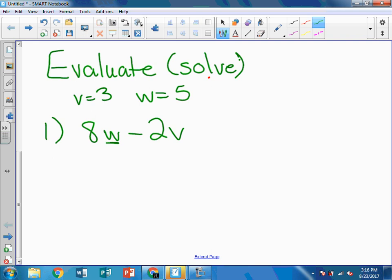Now, what's W? It's 5. So I'm going to rewrite this and I'm going to write 8 times 5. It doesn't mean 85. It means to multiply. Minus 2 times, well, what's V? It's 3. 8 times 5 is 40. 2 times, because I do multiplication before I do subtraction, 2 times 3 is 6. 40 minus 6 is 34. So when I evaluate that expression, I get 34 for my answer.